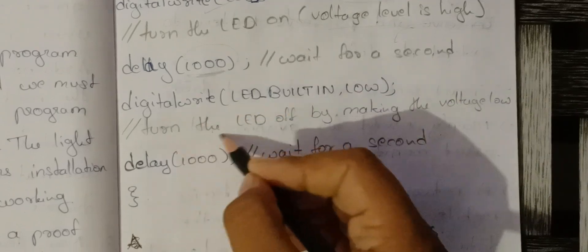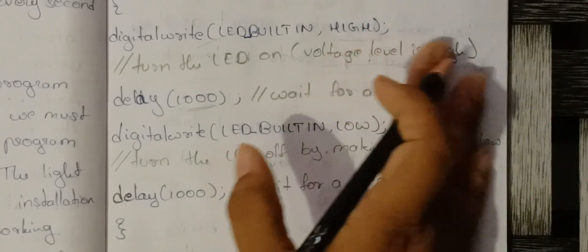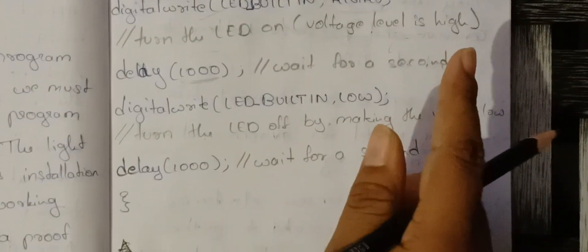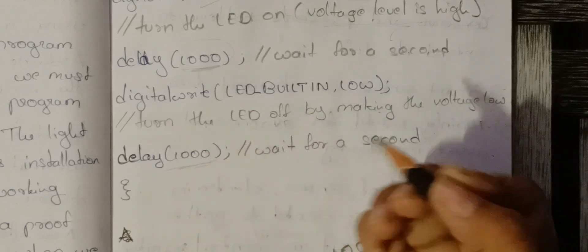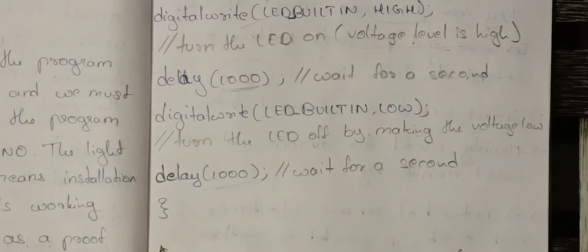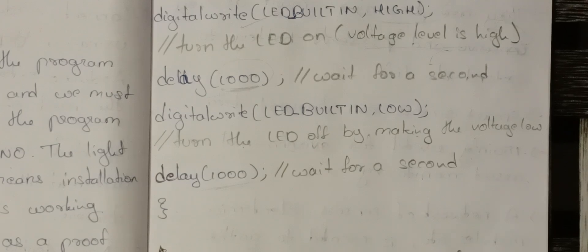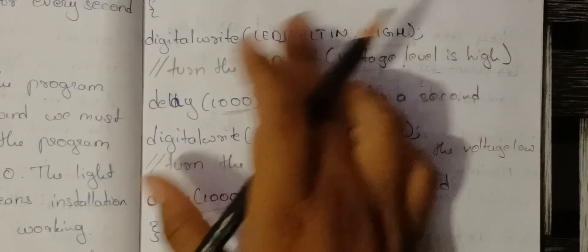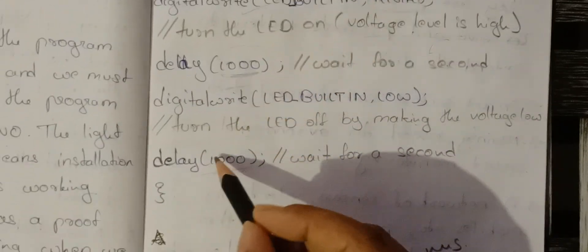Next, digitalWrite(LED_BUILTIN, LOW) turns the LED off by making the voltage low. Then there is another delay of one second. So the sequence is: first second the voltage is high and the light is on, next second the light is off, then on again, then off — creating the blinking effect with a one-second gap each time.